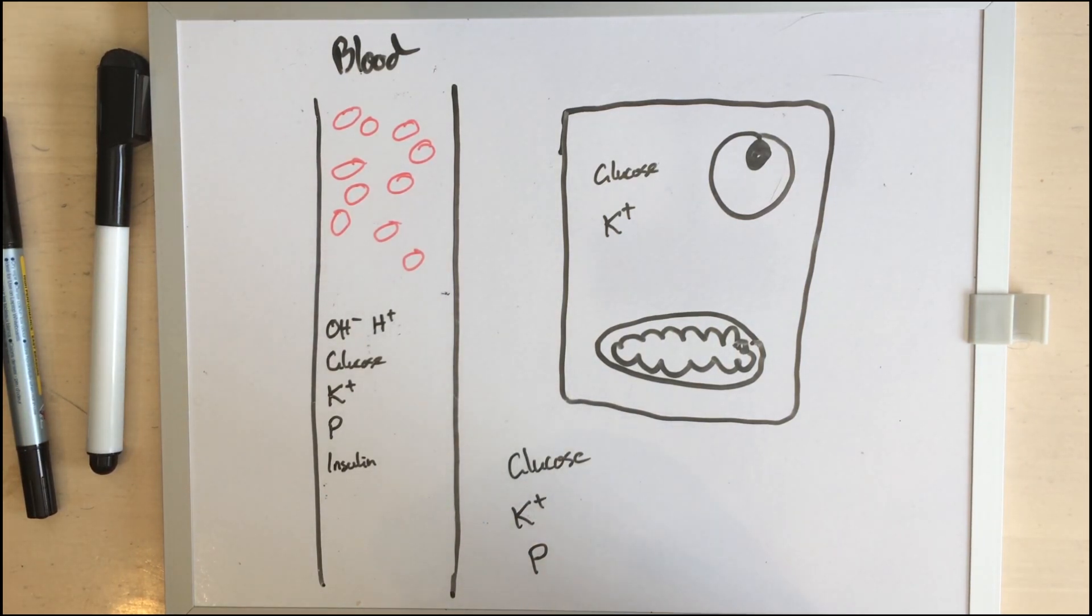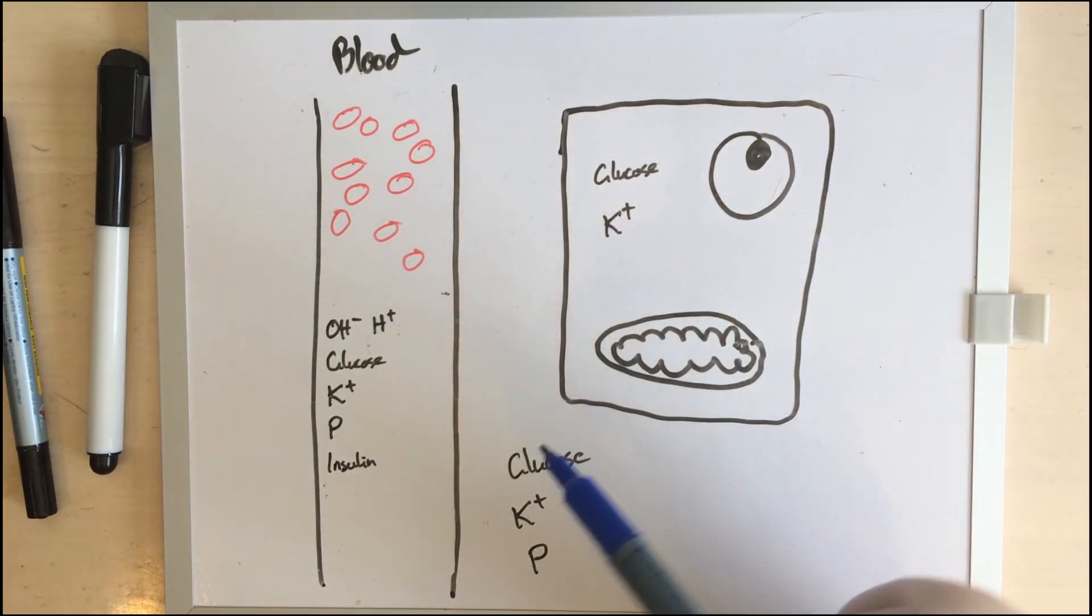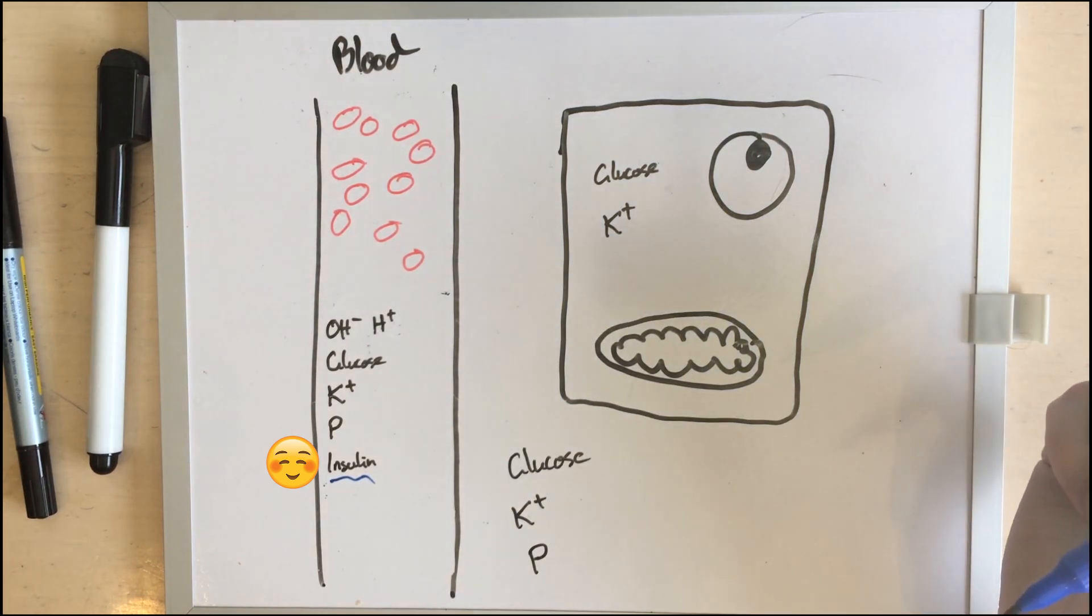You would all know that in a normal animal the glucose that you eat goes into the cells where it's turned into energy with the help of our friend insulin. In a diabetic they don't produce enough insulin on their own, which is fine, so we inject it and then they live a more or less normal life.